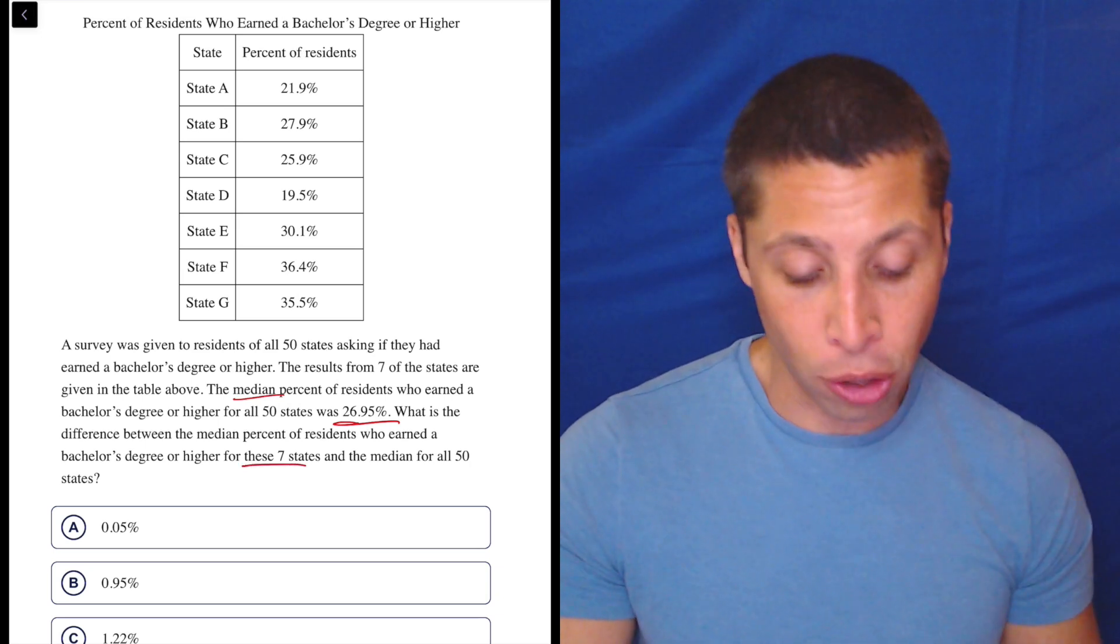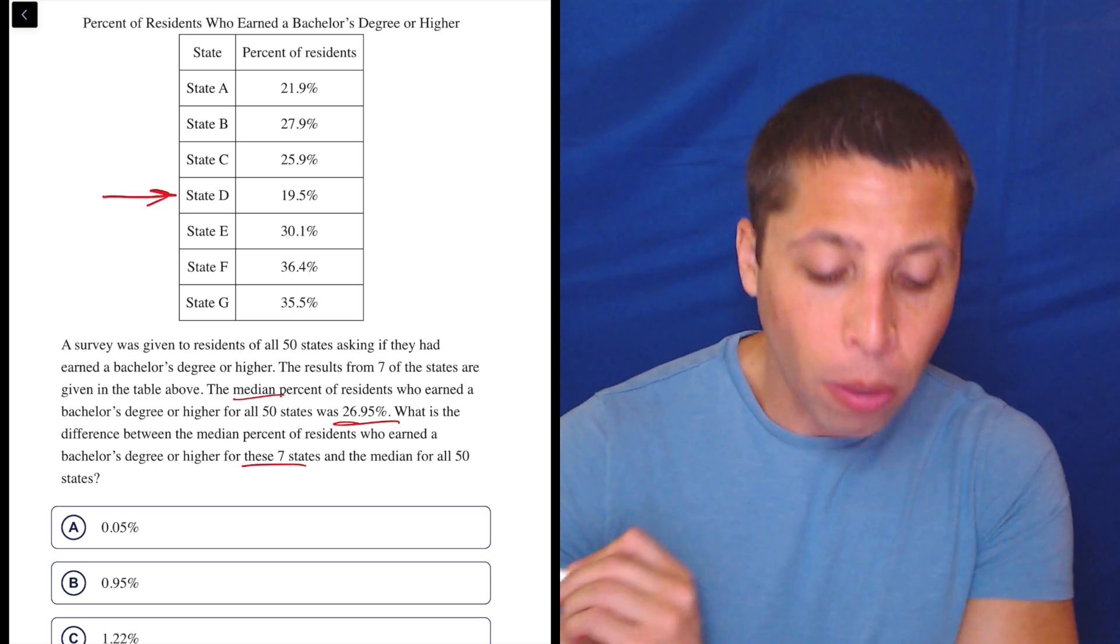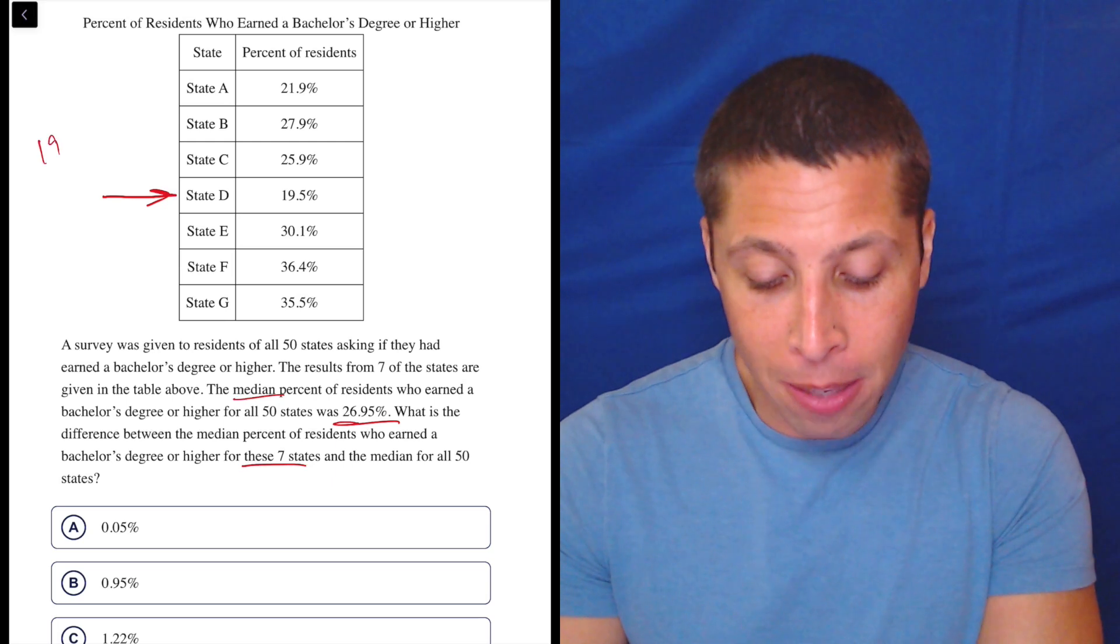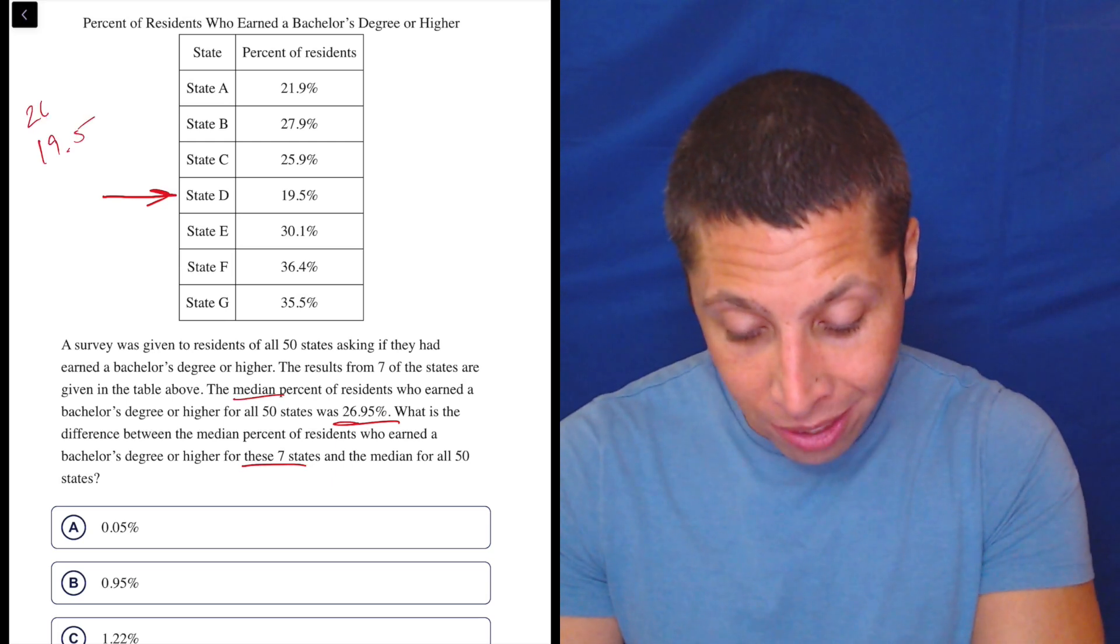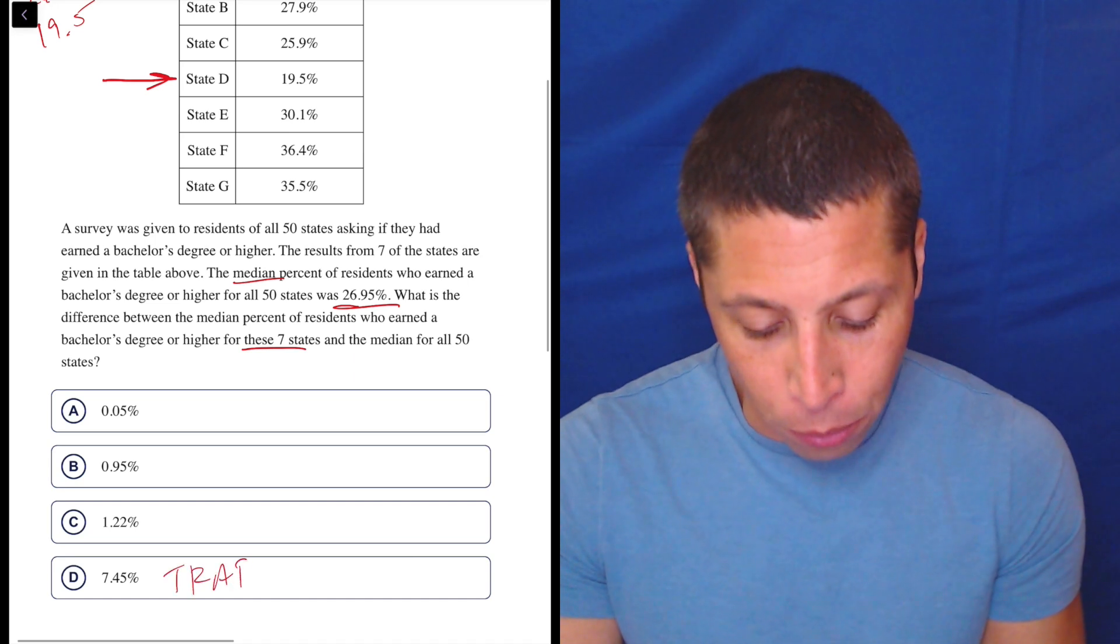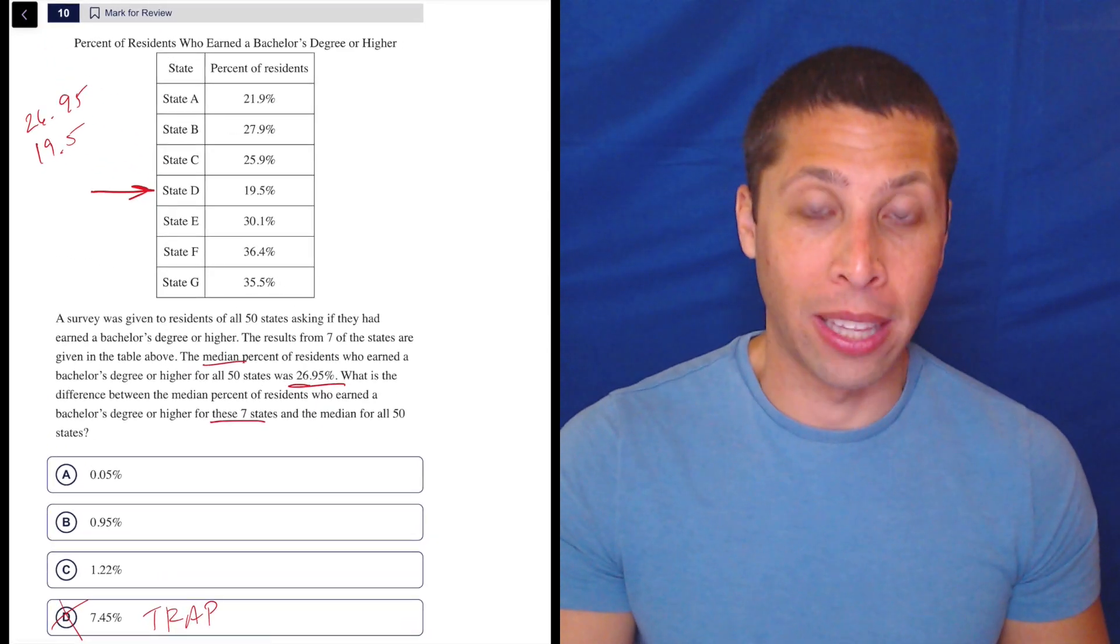So what's the median in the chart? So many people just go, ah, the middle row is D. So 19.5. And 19.5 from 26.95, you guessed it, is 7.45. Come on, guys. You cannot do stuff like that.